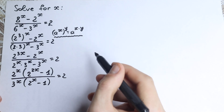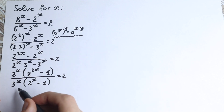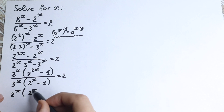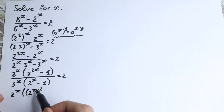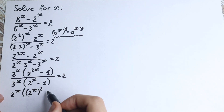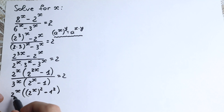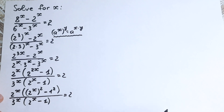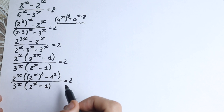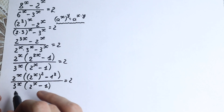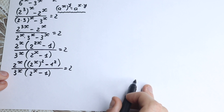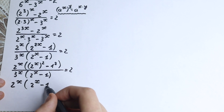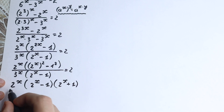Now look closely at the parentheses. We have 2 to the power 2x, which we can write as (2 to the x) squared, minus 1 squared. This is the difference of squares formula: a squared minus b squared equals (a plus b)(a minus b). So the numerator becomes 2 to the x times (2 to the x minus 1) times (2 to the x plus 1), all over 3 to the x times (2 to the x minus 1), equal to 2.